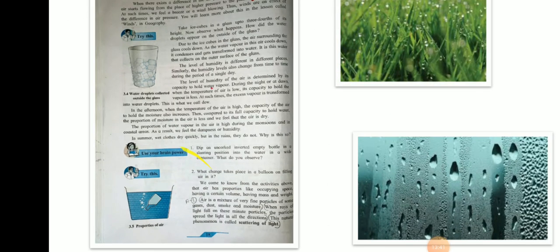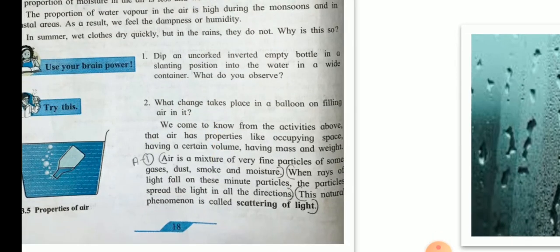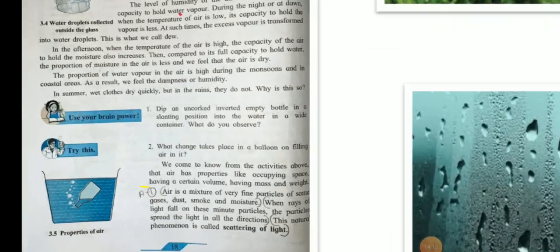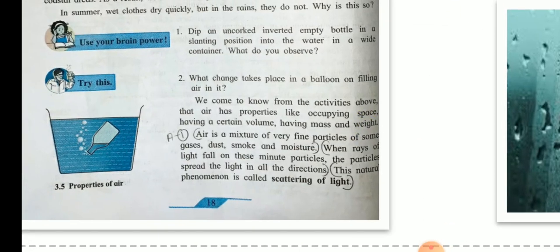What changes takes place in a balloon on filling air in it? Let us take a deflated balloon and observe it. Now, let us take another inflated balloon and observe it. We can see that the shape of the balloon changes and also its size increases due to expansion. We come to know from the activities above that air has properties like occupying space, having a certain volume, having mass and weight. Air occupies space and it has mass and weight.